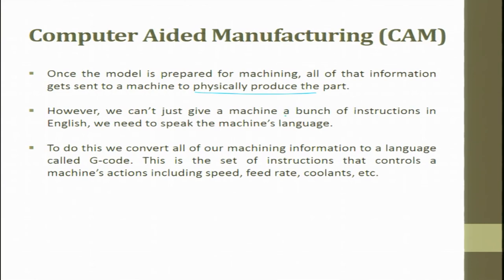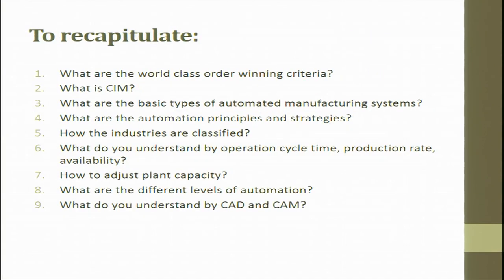In this lecture, we saw: world class order-winning criteria, what is SIM, basic types of automated manufacturing systems, automation principles and strategies, industry classification, operating cycle, production rate, availability, how to adjust plant capacity, the different levels of automation, and what CAD and CAM are.